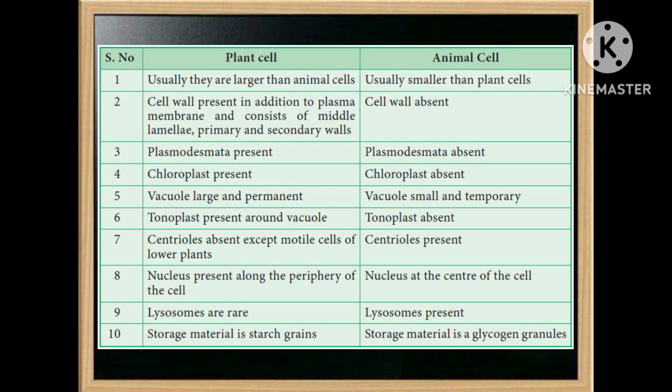Vacuole is large and permanent in plant cells, and small and temporary in animal cells. For plant cells, tonoplast is present around the vacuole; for animal cells, tonoplast is absent. Centrioles are absent in plant cells and present in animal cells. In plant cells, the nucleus is present along the periphery of the cell; in animal cells, the nucleus is at the center. Lysosomes are rare in plant cells and present in animal cells.